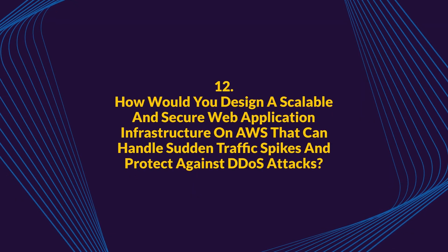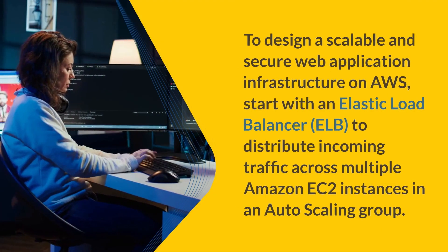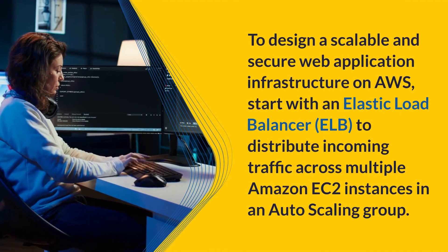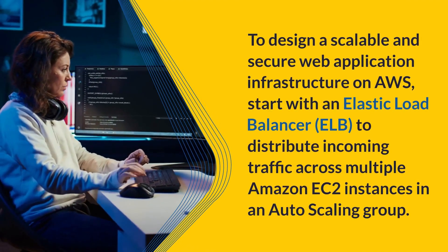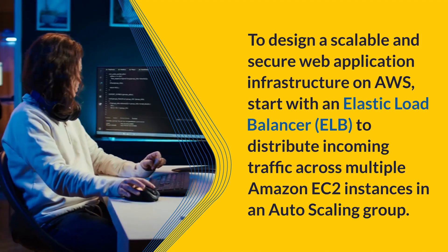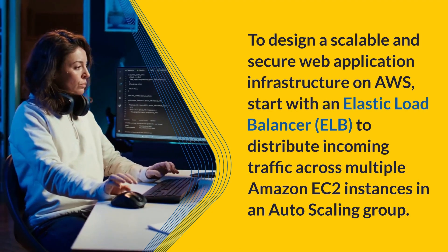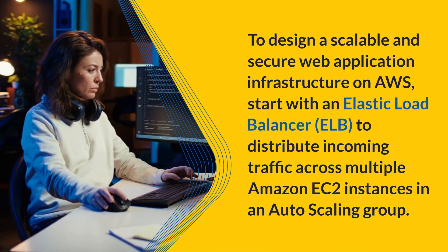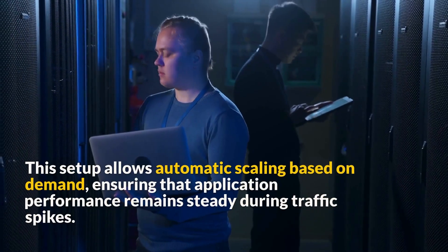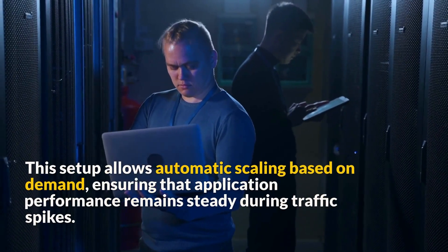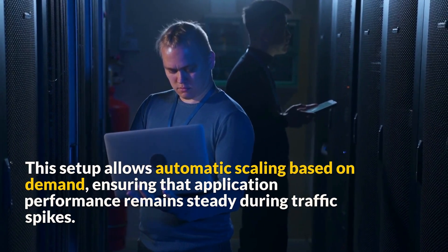Question 12: How would you design a scalable and secure web application infrastructure on AWS that can handle sudden traffic spikes and protect against DDoS attacks? To design a scalable and secure web application infrastructure on AWS, start with an Elastic Load Balancer to distribute incoming traffic across multiple Amazon EC2 instances in an Auto Scaling group. This setup allows automatic scaling based on demand, ensuring that application performance remains steady during traffic spikes.